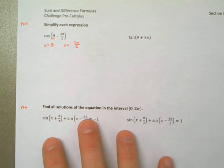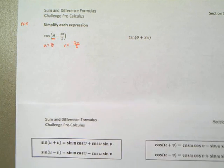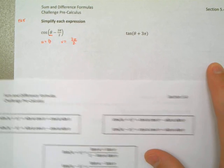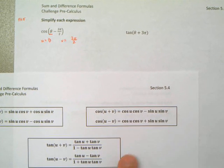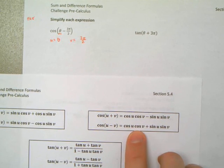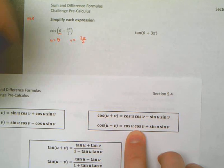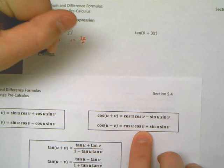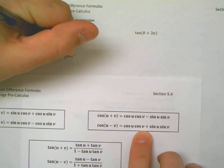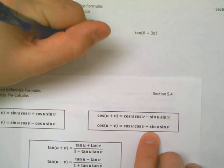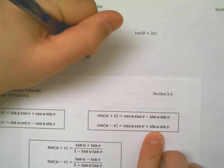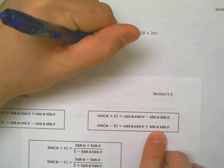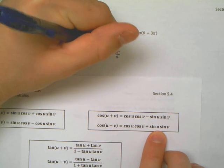So I come over here and look at my formula sheet, which of course needs to be memorized at some point in time, but for now we're practicing. The cosine of u minus v is cosine of u, that is to say it is cosine of θ, times the cosine of v, which is the cosine of 3π/2. It's plus the sine of u, which is the sine of θ, times the sine of v, which is the sine of 3π/2.